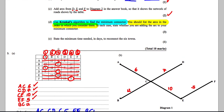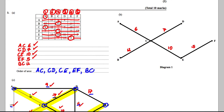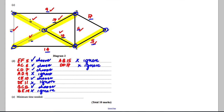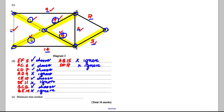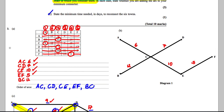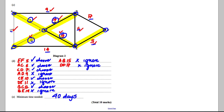The last part asks for the minimum time in days to reconnect the towns. We sum the chosen arcs: 6 + 7 + 12 + 10 + 5 = 40 days. We can verify with Prim's result: 6 + 7 + 10 + 5 + 12 = 40 days. Both algorithms give the same answer of 40 days.